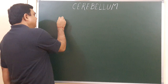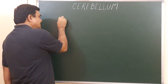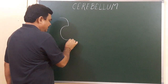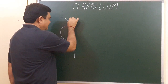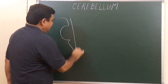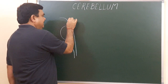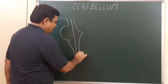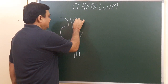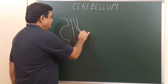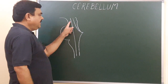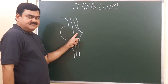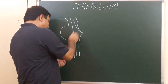Here we'll make a diagram. In this diagram you can see this is the brain stem. This is midbrain, this is pons, this is medulla oblongata. It is the fourth ventricle — this is the fourth ventricle. And here is the position of the cerebellum.